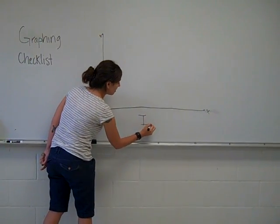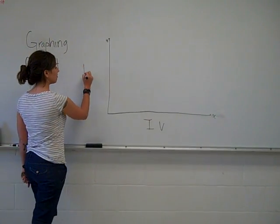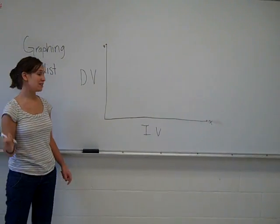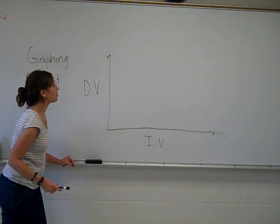So independent variable goes on the x-axis and then the dependent variable goes on the y-axis. Dependent variable depends on the independent variable.